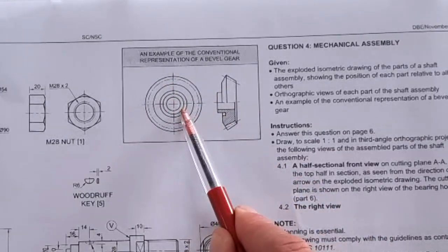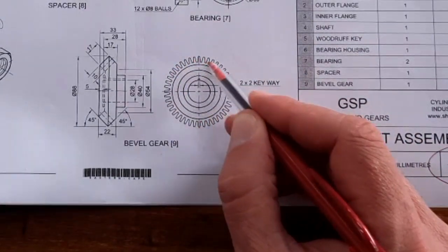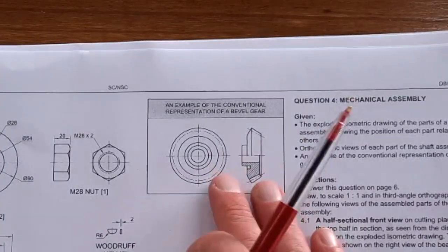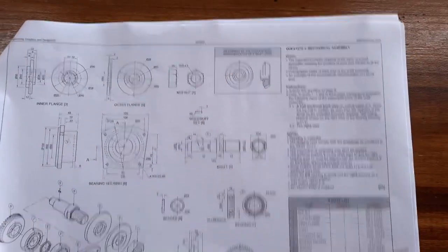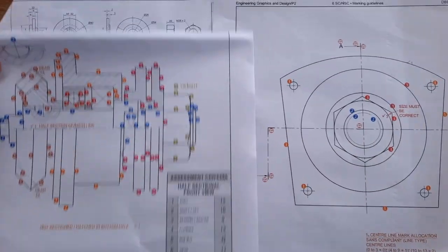Make sure you look at the example of how to represent a conventional bevel gear, because these will be the kind of ways that you will have to draw these bevel gears. You'll never be asked to draw it in this much detail - they'll always give you the hint here. So don't neglect these kind of notes that are given.